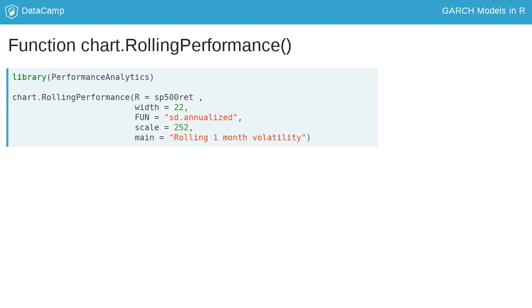In R, you can do this rolling calculation with the function chart.RollingPerformance. As arguments, it requires the return series, the size of the window, the estimation function, and the number of trading days in a year.